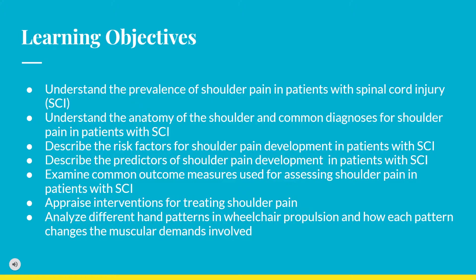Here are our learning objectives. By the end of this presentation, you will understand the prevalence of shoulder pain in patients with spinal cord injury, understand the anatomy of the shoulder and common diagnoses for shoulder pain in patients with SCI, describe the risk factors and predictors for shoulder pain development, examine common outcome measures, appraise interventions for treating shoulder pain, and analyze different hand patterns in wheelchair propulsion and how each pattern changes the muscular demands involved.